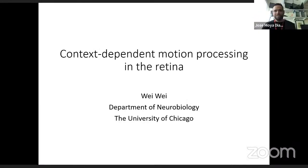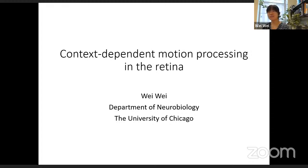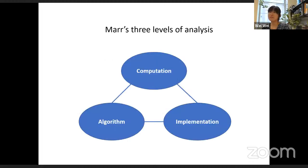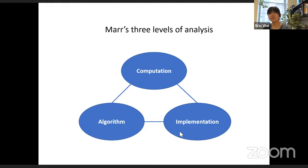A general goal of my group is to understand the neural basis of sensory processing. An influential conceptual framework for analyzing neural circuits is David Marr's three levels of analysis. The first level is computation: what does the circuit compute, what is its function? Next is the algorithm: what algorithm is used to carry out the computation? And lastly, how is the algorithm implemented by biophysical substrates in the nervous system, such as synapses, dendrites, and neural networks?